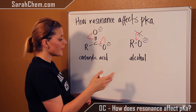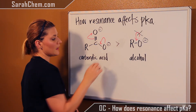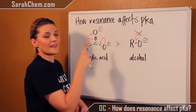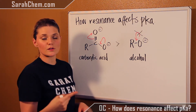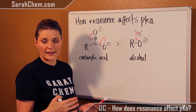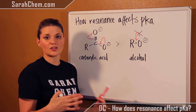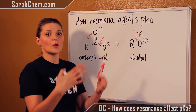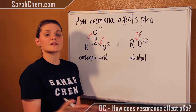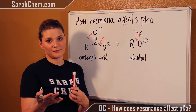So in this case we know that the carboxylic acid would be more acidic than the alcohol, and that's because resonance allows for the electrons to be delocalized, which stabilizes the conjugate base. When your conjugate base is stabilized, you have a very strong acid.